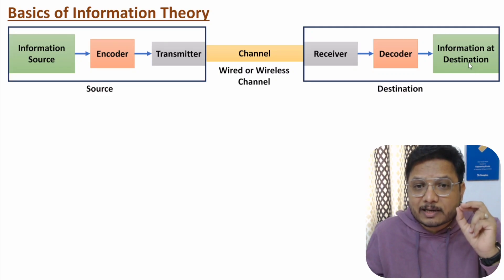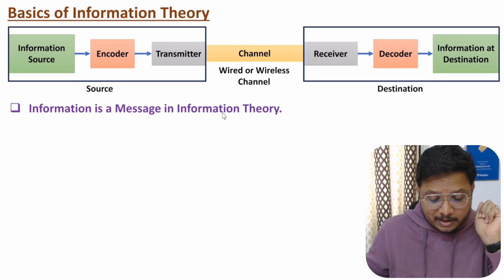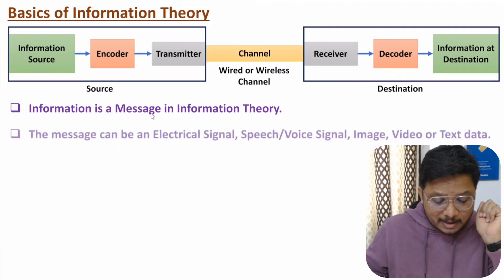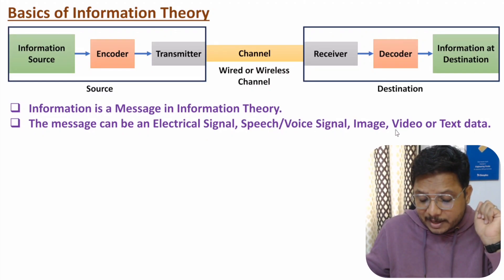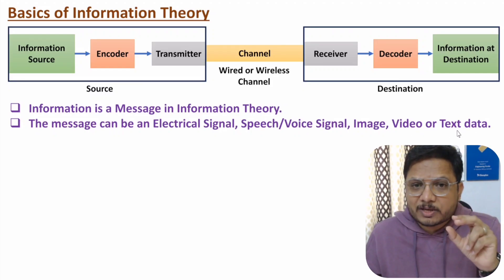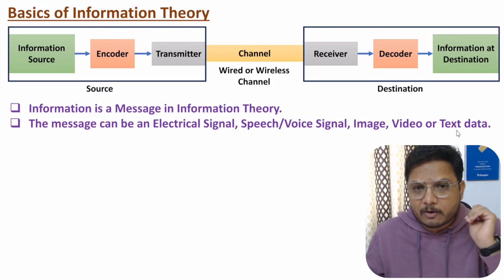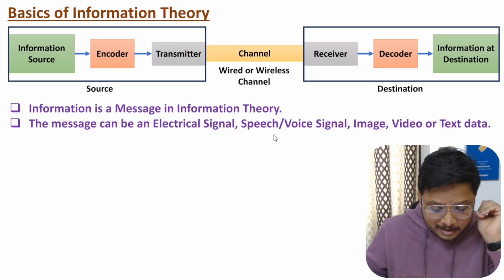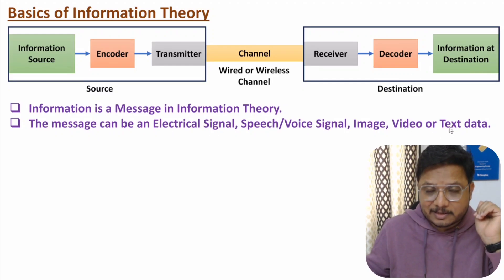You need to understand what is information. Information is a message in information theory. This message can be an electrical signal, speech or voice signal, image signal, video signal, or text data. So information is a message, and this message can be there in different forms like electrical signal, speech signal, image signal, video signal, or text data.